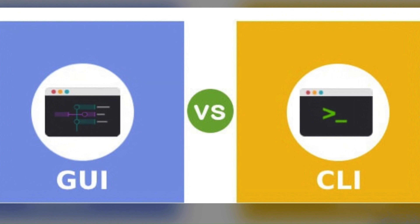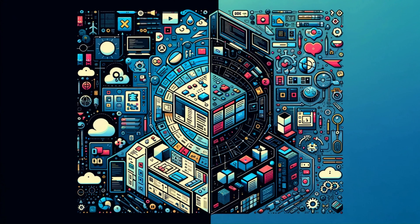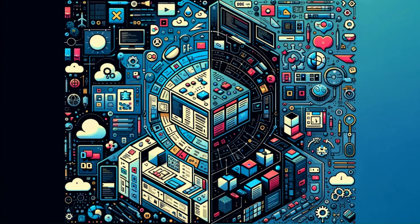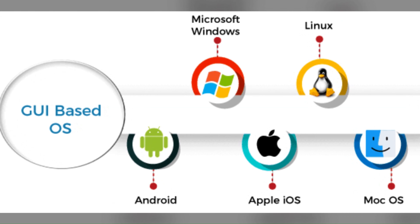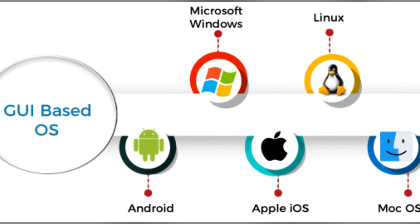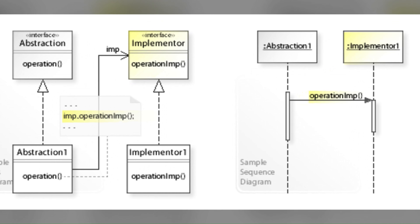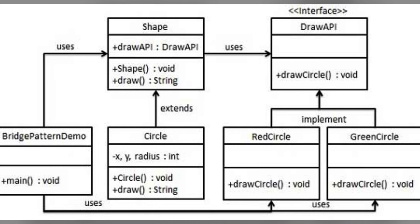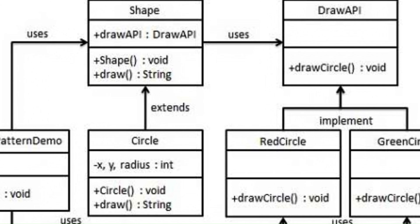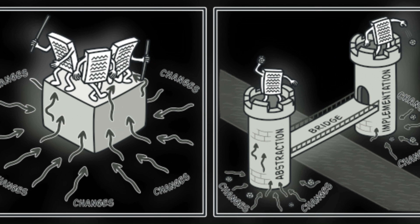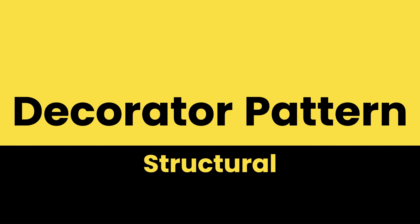In a software application with a graphical user interface, the Bridge pattern can separate the GUI from the underlying operating system functionality. This allows you to change or add new GUI elements or operating system components independently without affecting each other. Typically you use this pattern when you want to avoid a permanent binding between an abstraction and its implementation, particularly when they need to be selected or switched at runtime.